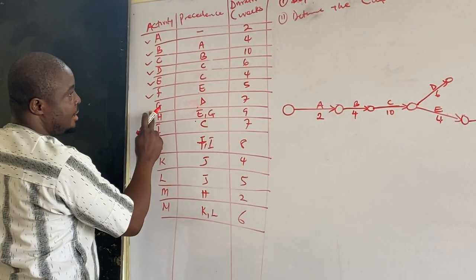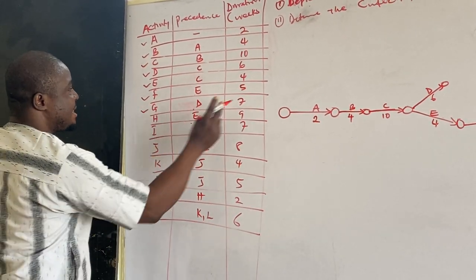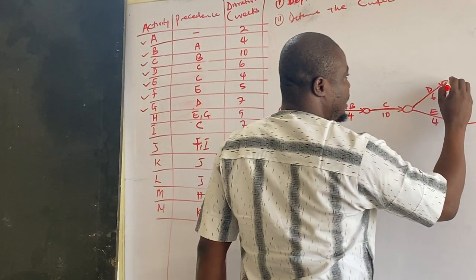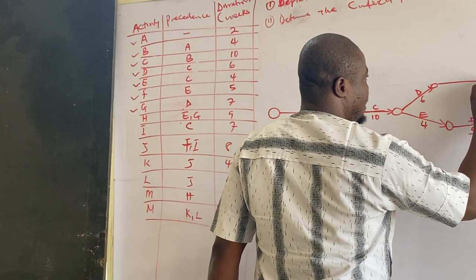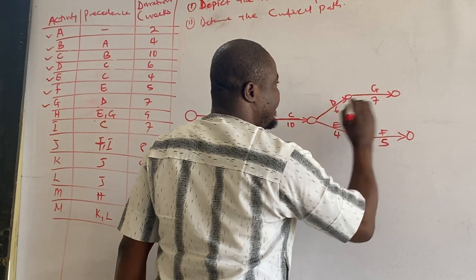Then D is going from D at seven. G is going from D at what? Seven.